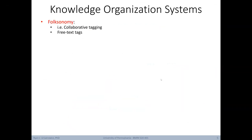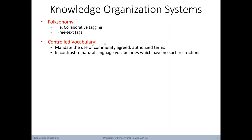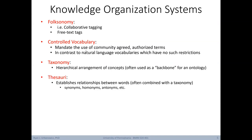Now let's briefly define a variety of knowledge organization systems. A folksonomy, otherwise known as collaborative tagging, is basically just a set of free text tags. A controlled vocabulary mandates the use of a community agreed set of authorized terms. This is in contrast to natural language vocabularies, which doesn't really have any formal restrictions. Next we have a taxonomy, which is just a hierarchical arrangement of concepts. Notably, taxonomies often serve as the backbone for ontologies. Then we have thesauri, which establish relationships between words, for example synonyms, homonyms, and antonyms. Thesauri are often combined with taxonomies.